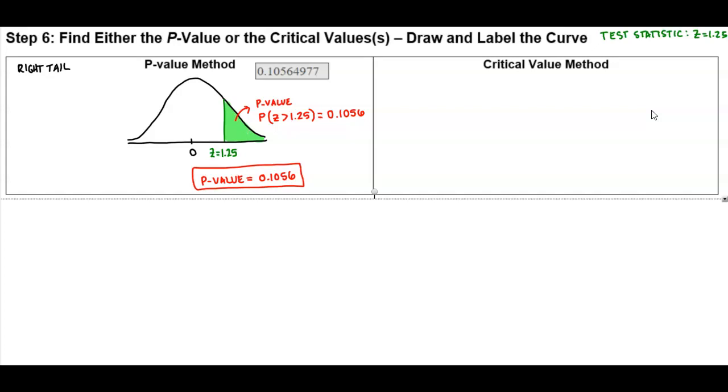So now we know that back at the beginning, this is a right tail, and we also know that the significance level is 0.05.